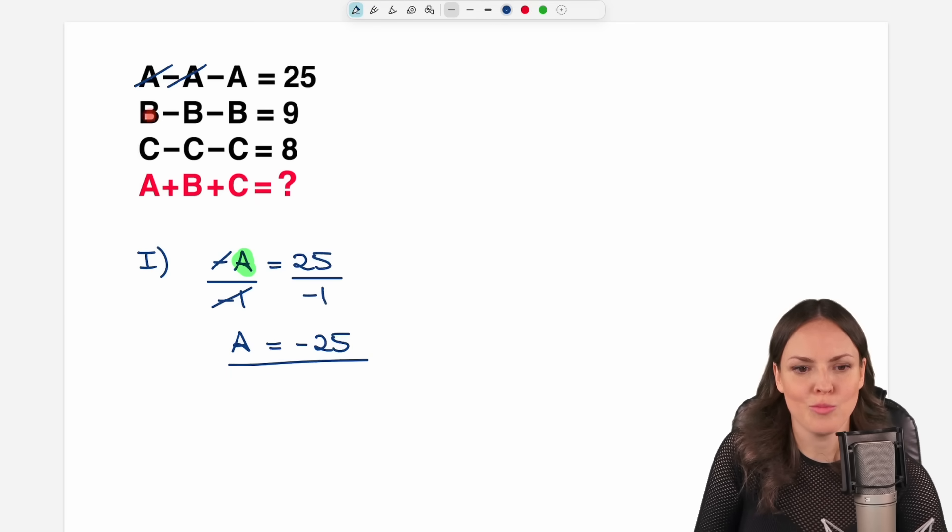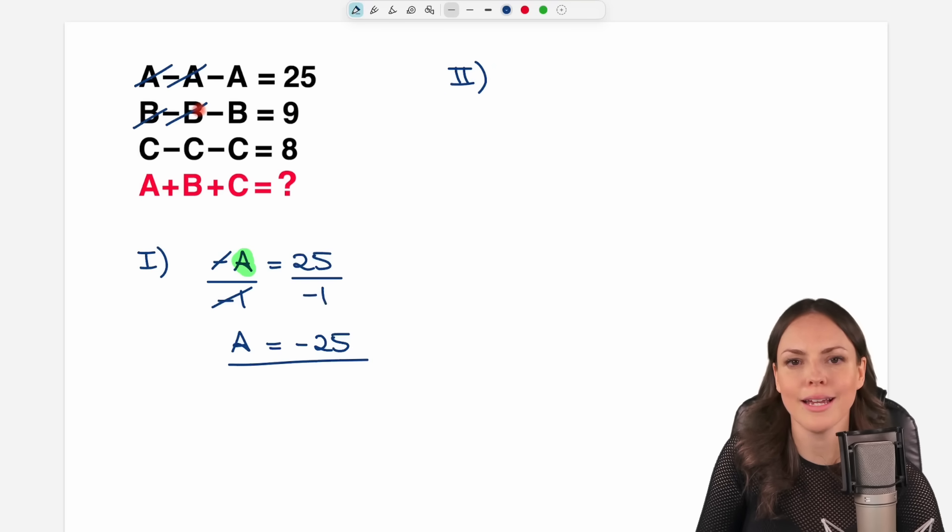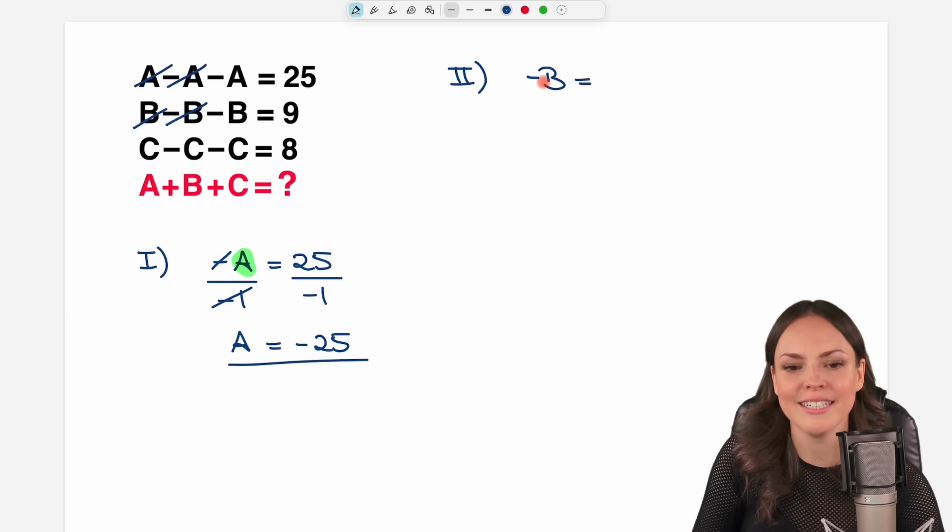What about B? So let's take a look at the second equation. B minus B cancels out. Only minus B is left here, which is equal to 9.